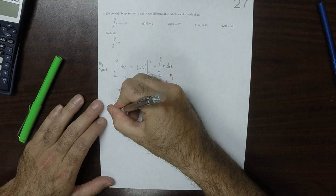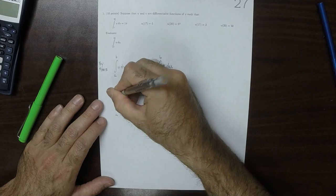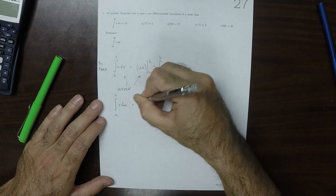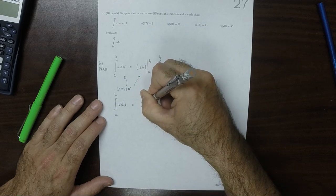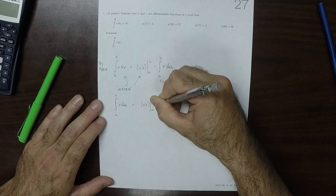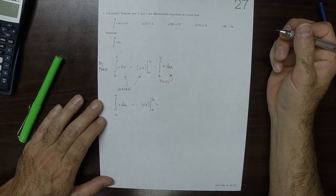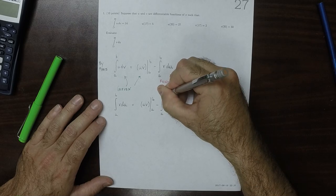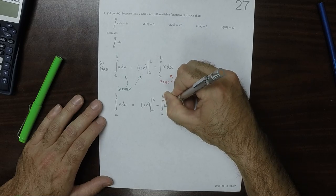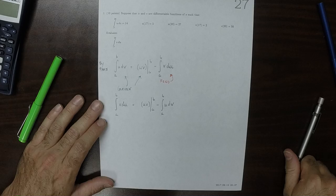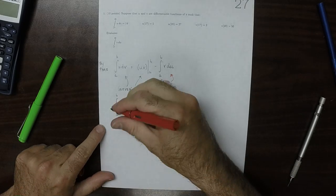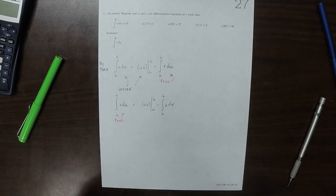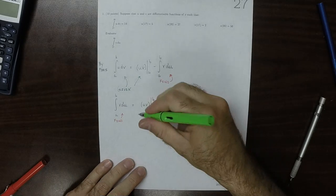Then the integral A to B of V dU is the evaluation of the expression UV from A to B, minus the integral A to B of U dV. So now we find this one, given these ones.